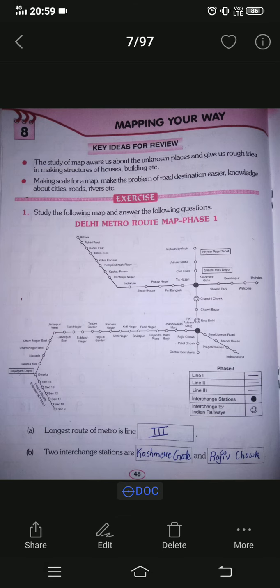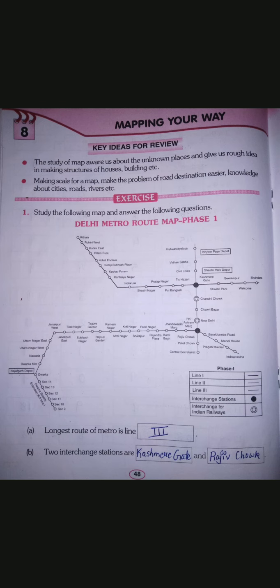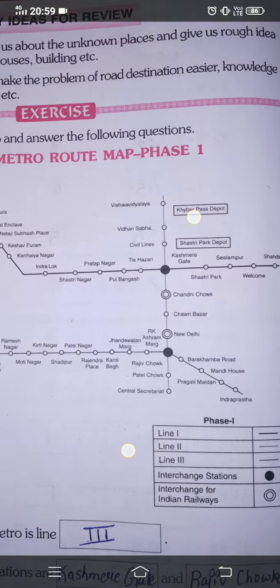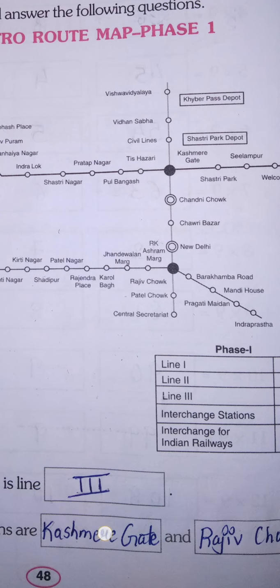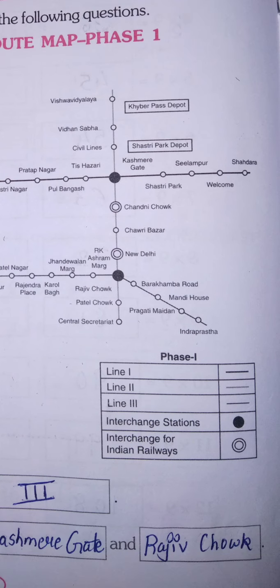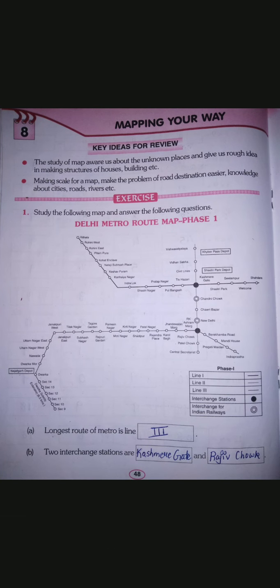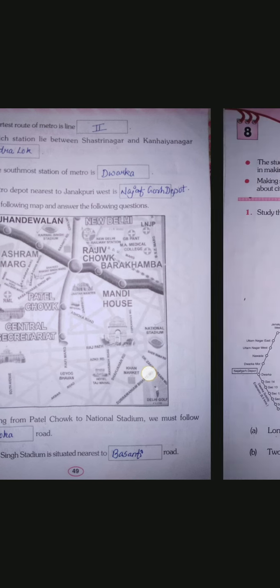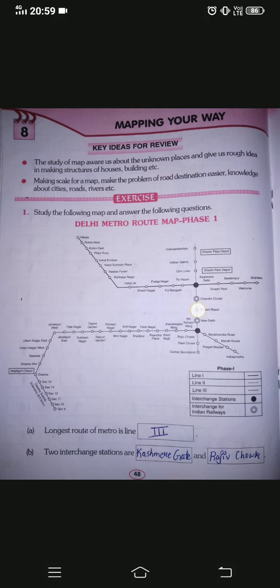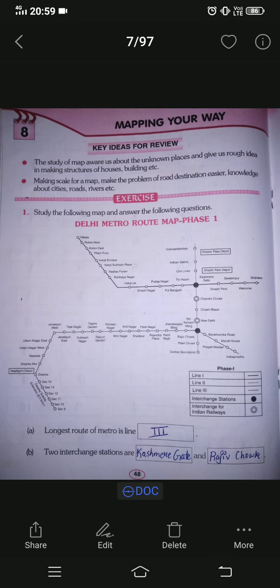The longest route of metro is Line Three — write Line Three in the answer. Next question: the two interchange stations are? Interchange stations are marked with filled black dots. Both interchange stations are Kashmir Gate and Rajiv Chowk. Write Kashmir Gate and Rajiv Chowk in the answer. Next question: shortest route of metro is which line? The shortest is Line Two — write Line Two.